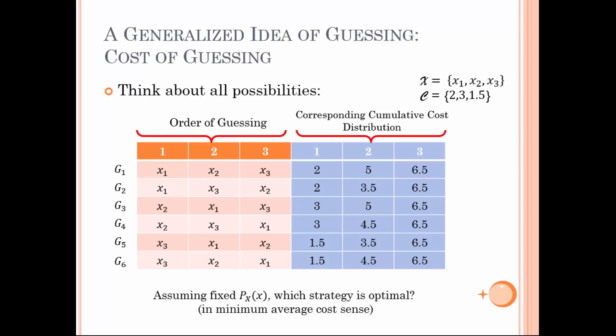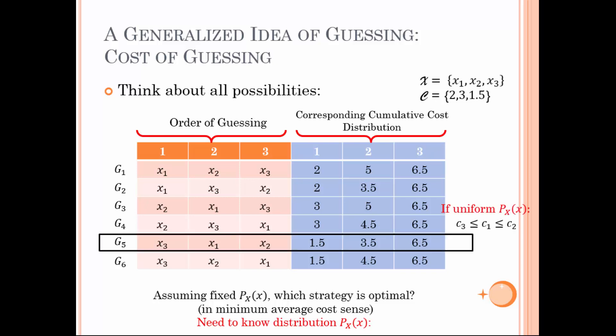On the other hand, if you assume a fixed probability distribution, the natural question is to ask which one of these strategies is optimal according to some specified criterion such as minimum average cost sense or some moment of guessing cost. And in order to assess the optimal solution, we would need to know the probability distribution. In other words, without knowing the distributions, it is impossible to determine the optimal strategy by just considering the costs associated with each choice. For instance, if the probability distribution is uniform — each element of X happens with the same probability — then the strategy G5, as shown in this slide, would be the best in average guessing cost sense.